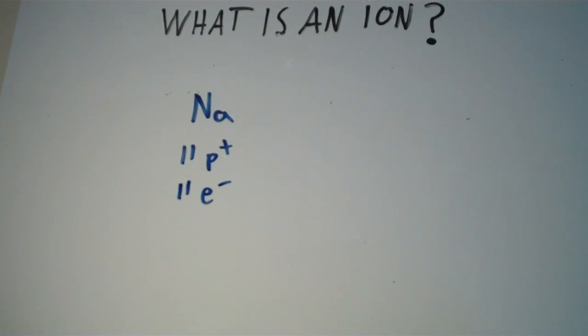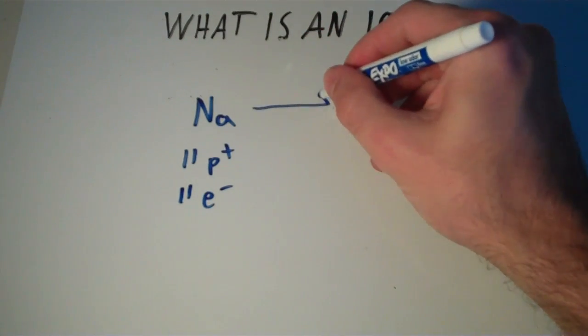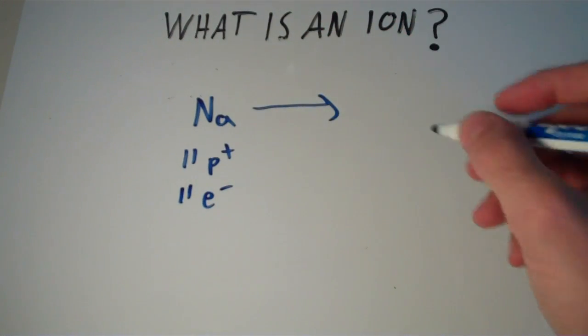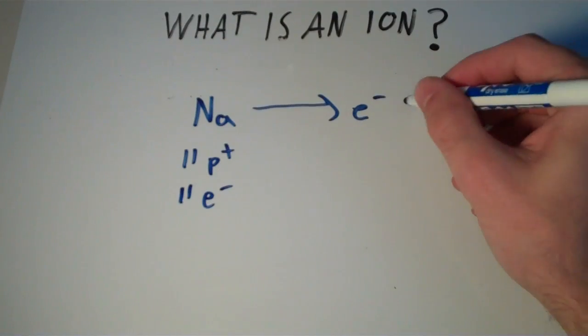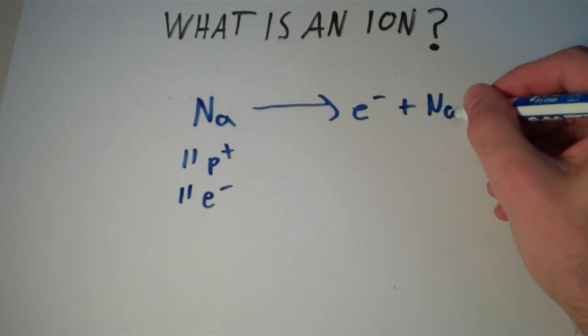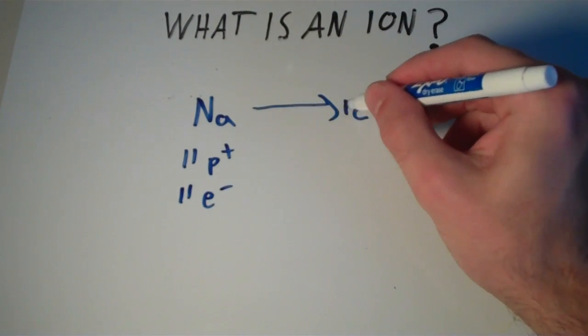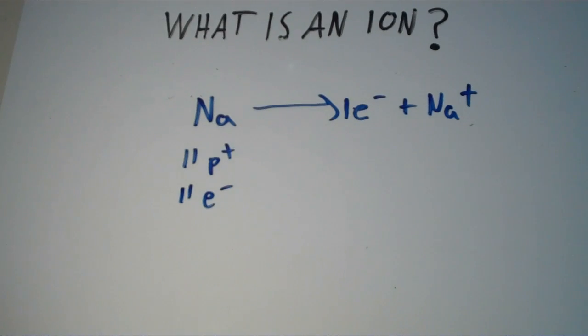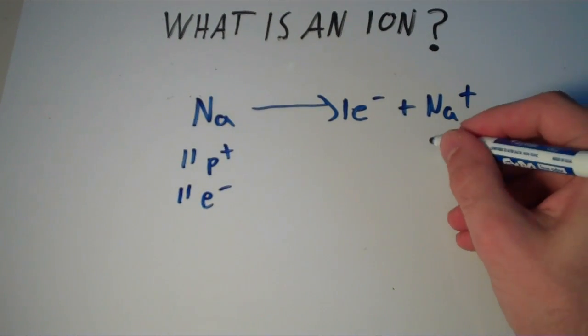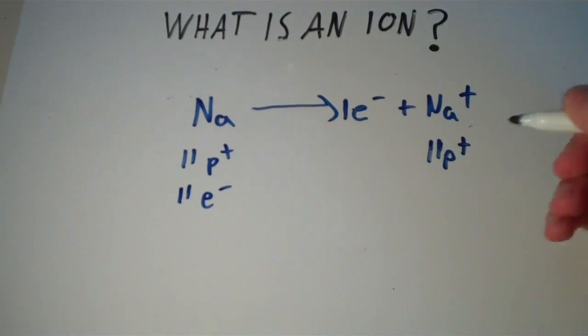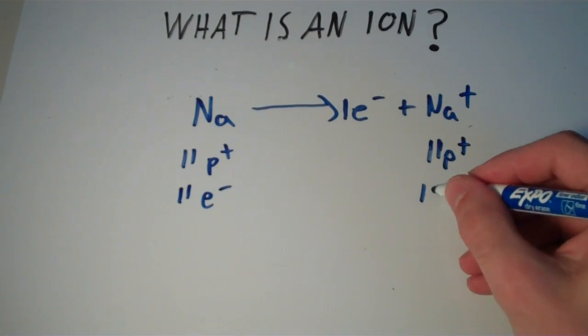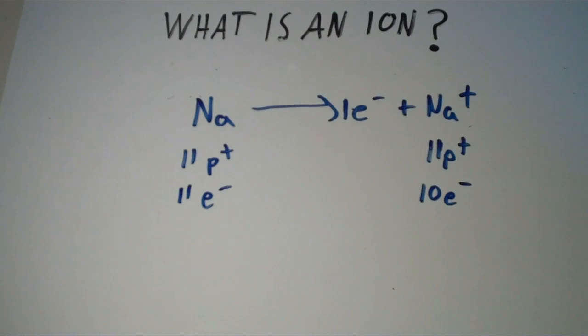However, this sodium atom, in many chemical changes, can lose an electron to become a sodium ion. This sodium ion still has 11 protons, but now it has one fewer electron, or 10 electrons.